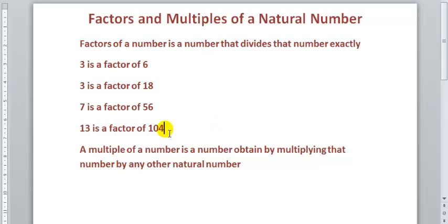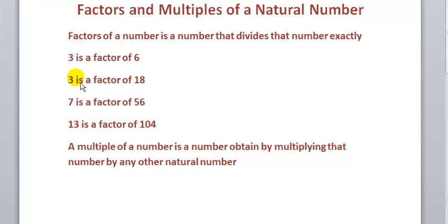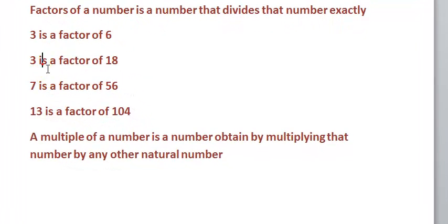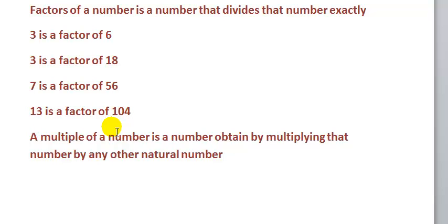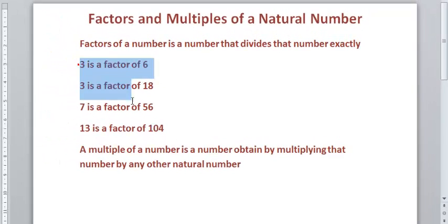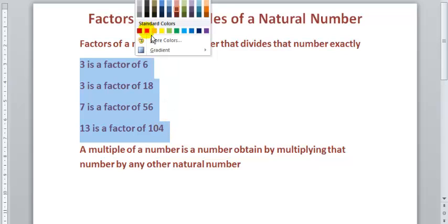We can double-check this using our calculator. We all know that 3 is a factor of 18, 7 is a factor of 56, and 13 is a factor of 104. You can check your calculator and find out these are correct. Let's move on.